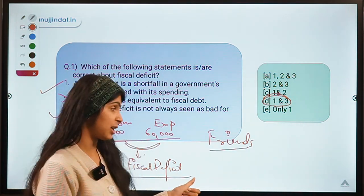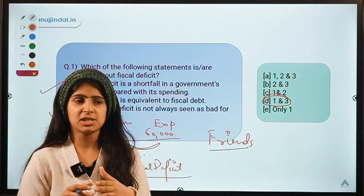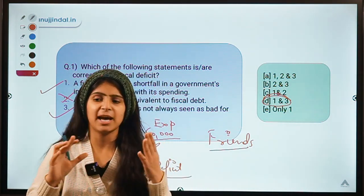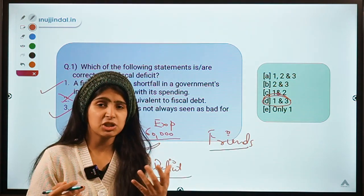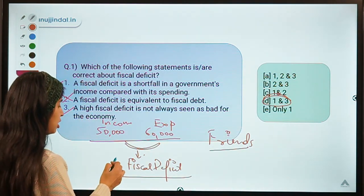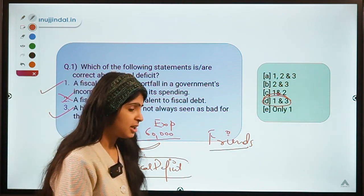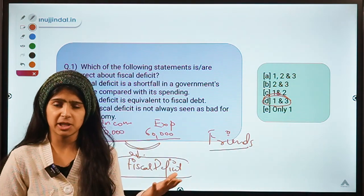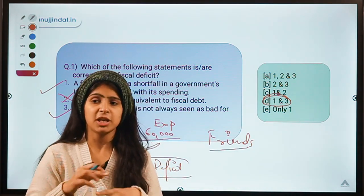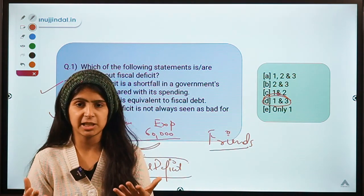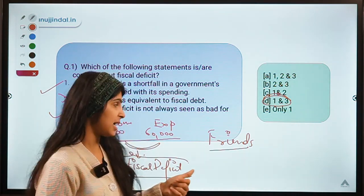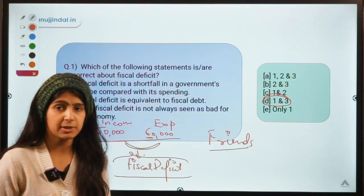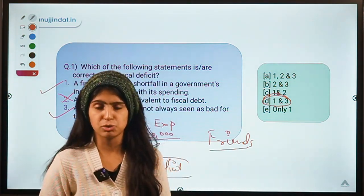Similarly, just as you are trying to cover your expenses, the government also tries to do that. Imagine a government handling such a vast country like India — obviously they have to make certain expenditures and they have certain incomes. When their expenditures exceed their income, they suffer through a situation called fiscal deficit.